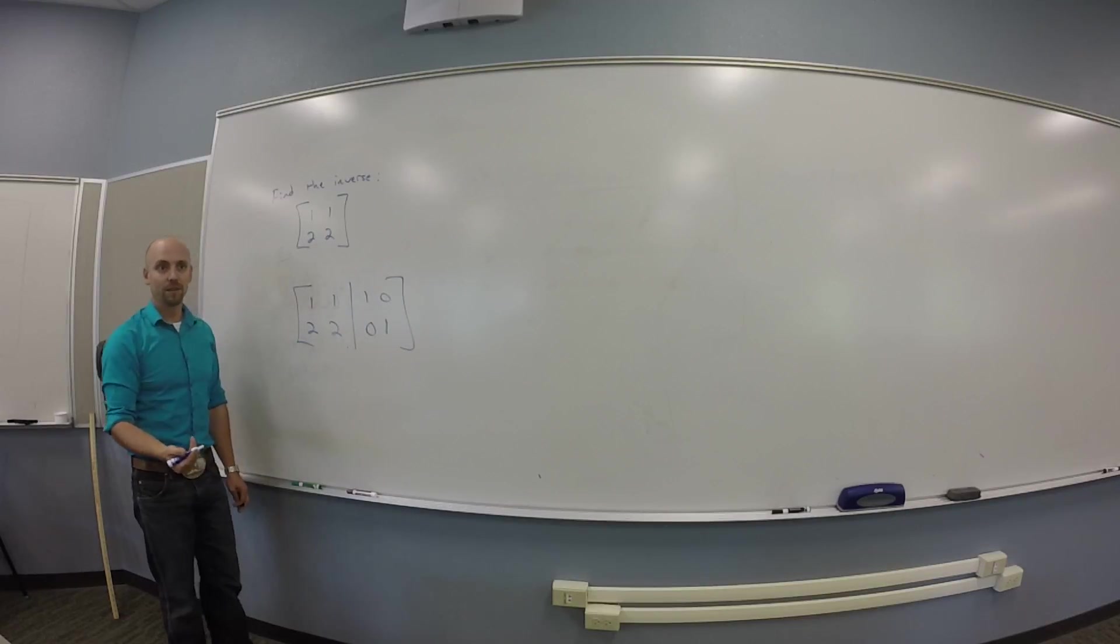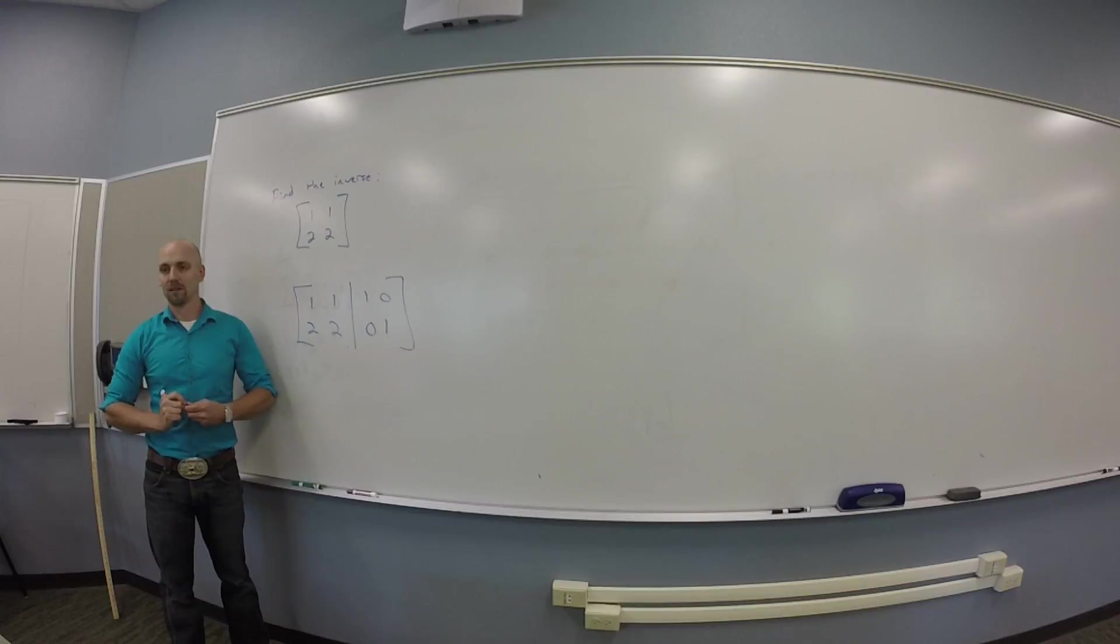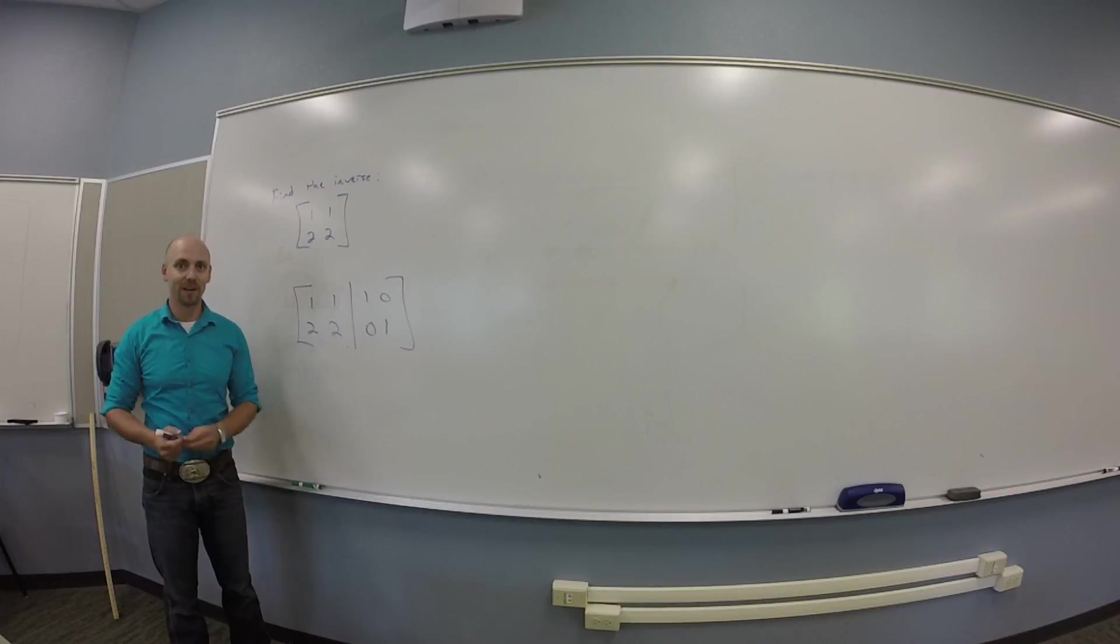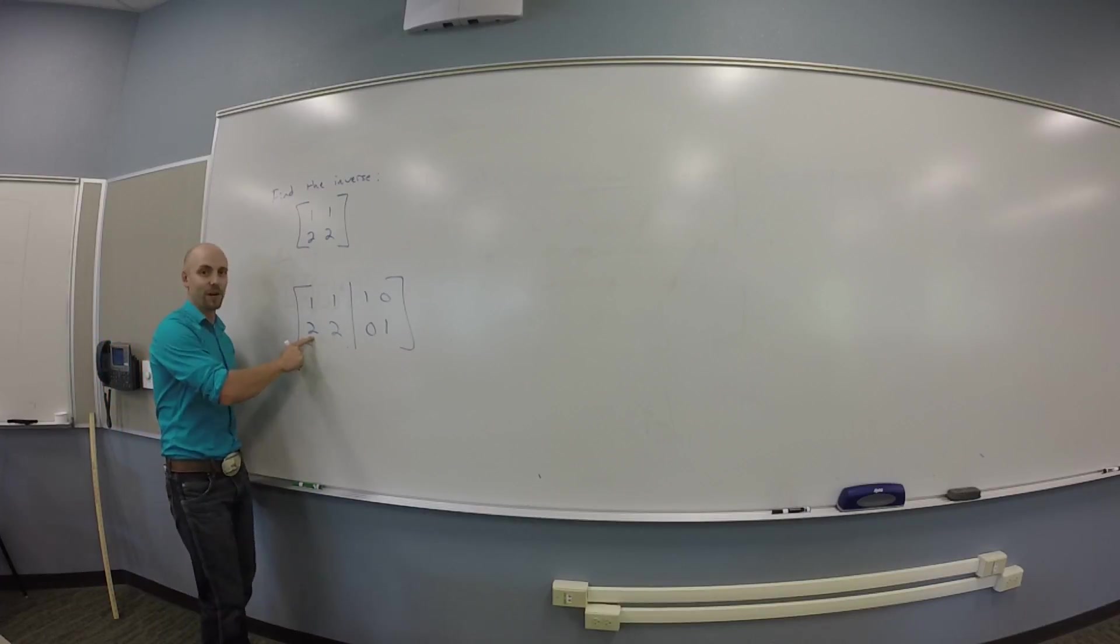Then one. You would try to change the identity to the other side, right? Okay. So, let's not say we try and let's just do it. Okay. So, what am I going to do to get a zero here? Multiply the top by negative 2 and add it together.